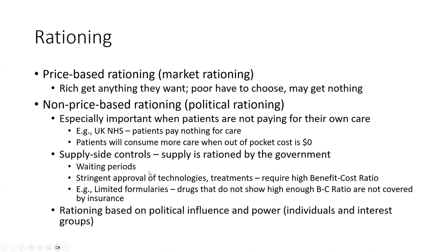Non-price-based rationing tends to use supply-side controls — supply is rationed by the government, creating waiting periods. For example, if you limit MRIs to one per hundred thousand people, you get really long lines. In Canada you might wait two or three months to get an MRI — if you have knee pain, you might wait six months. As a result, many Canadians who live near the US border come across and pay cash for MRIs and other services in northern US states.